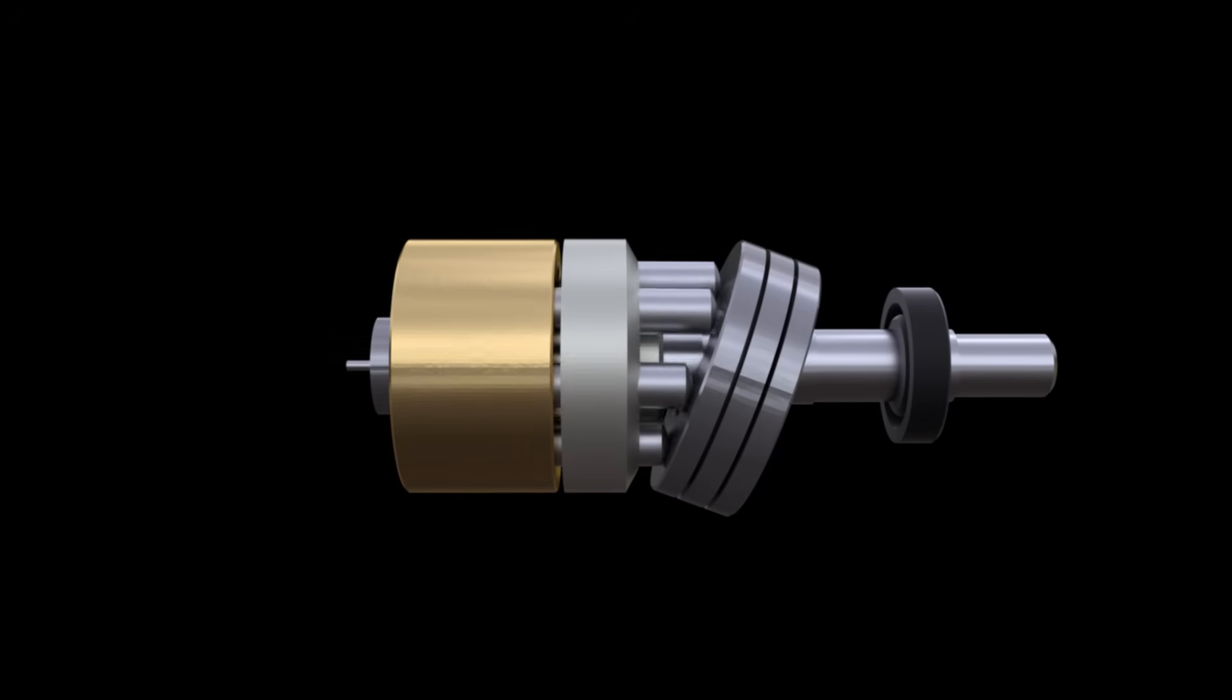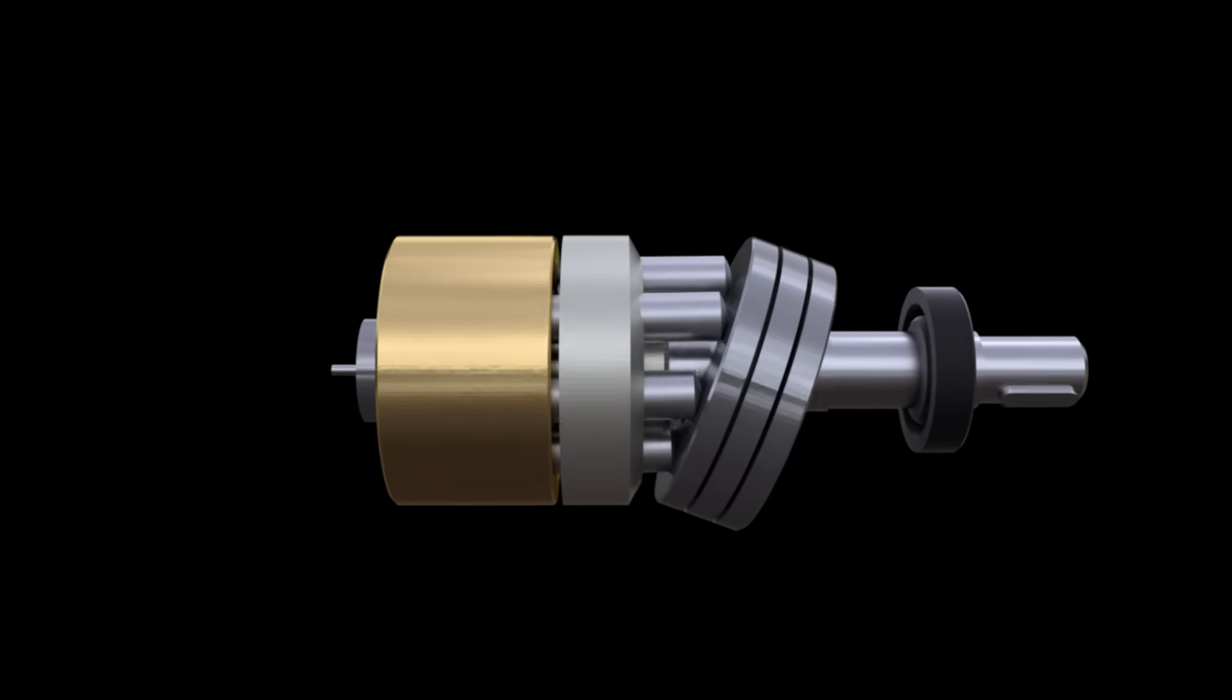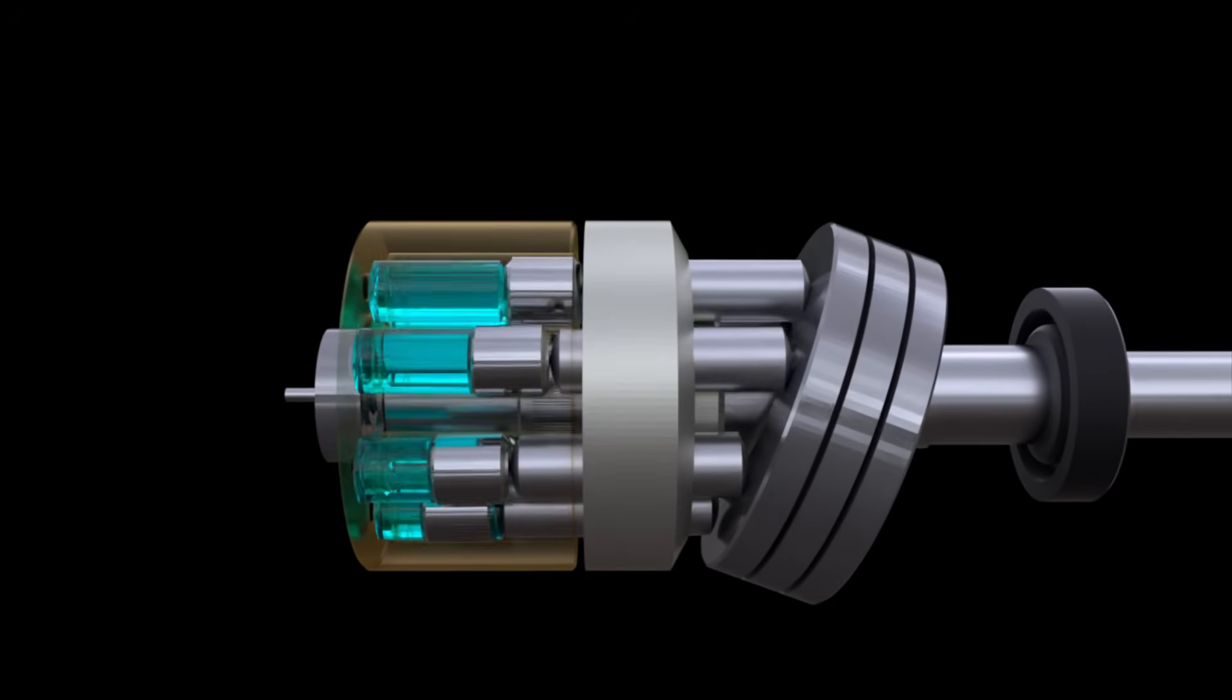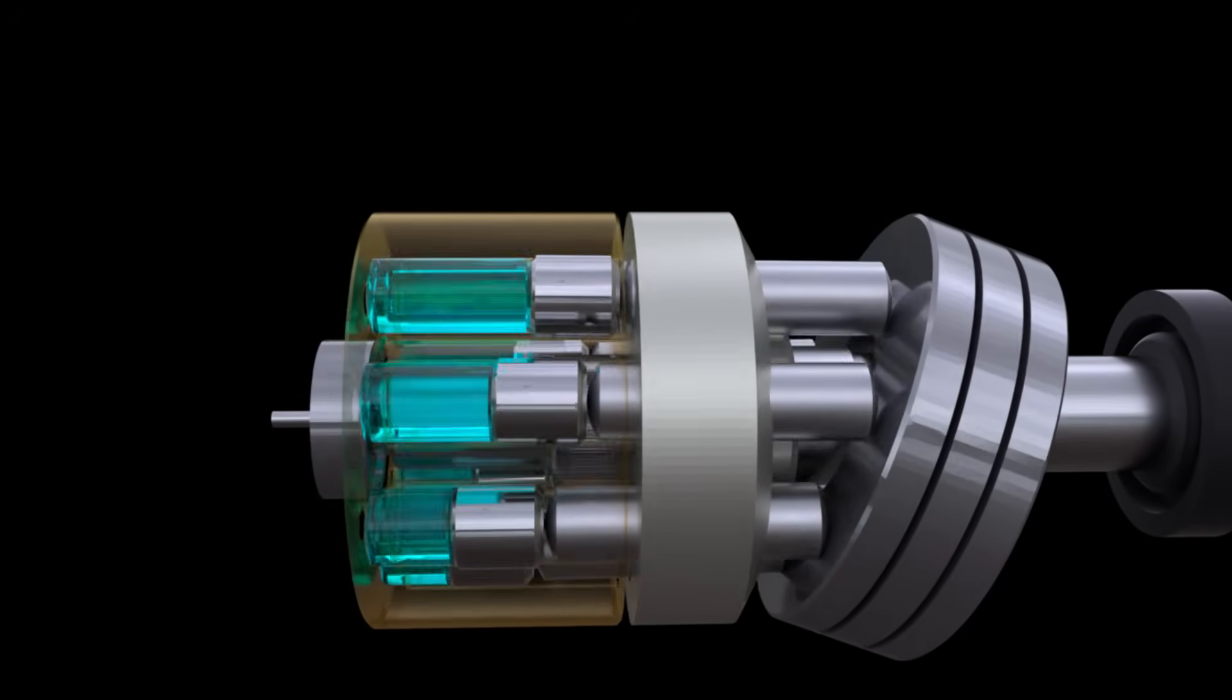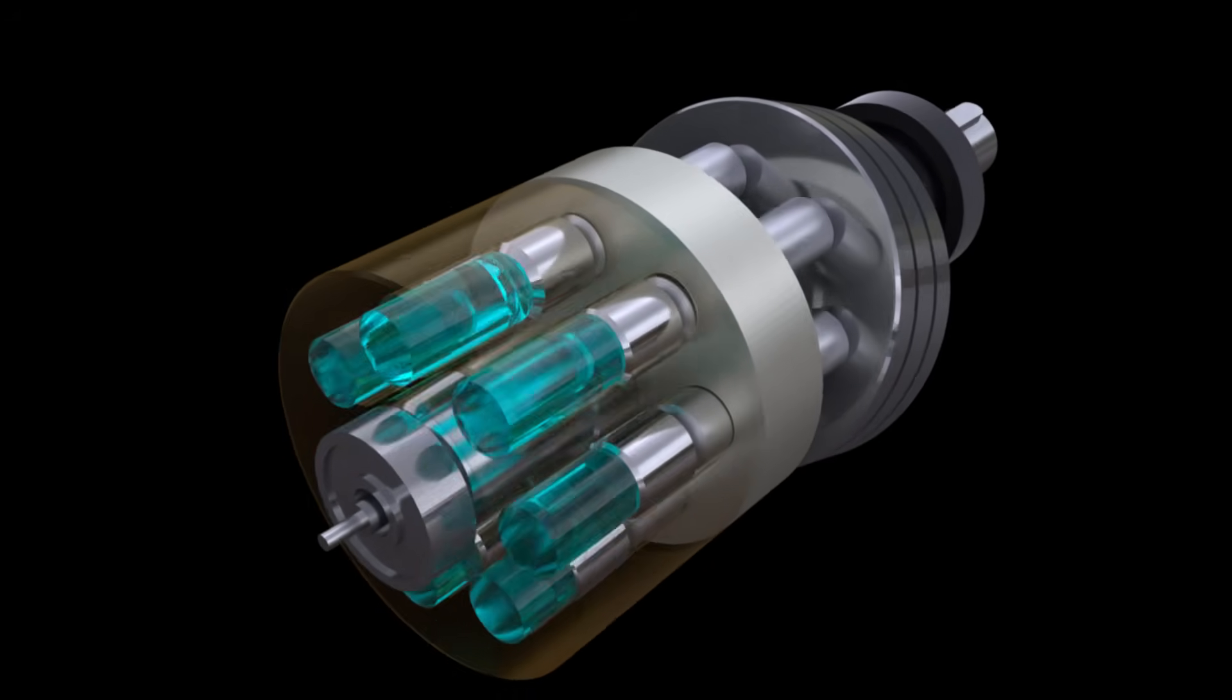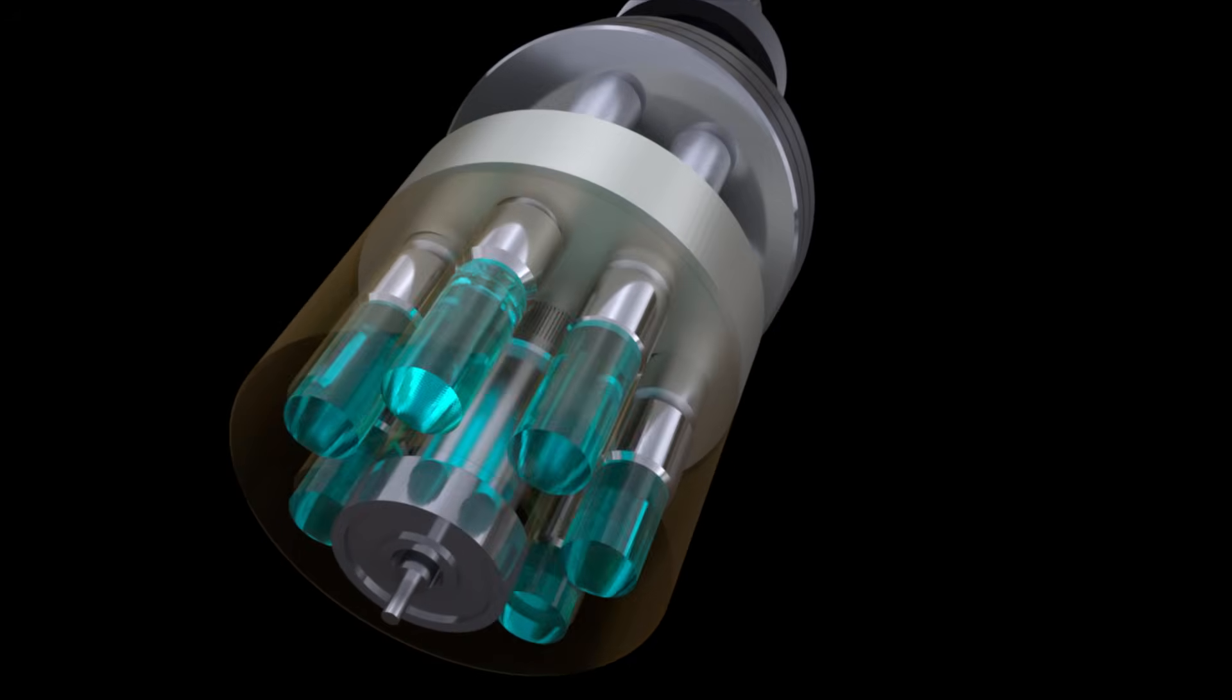When the block rotates, the pistons reciprocate. At the moment when the pistons move increasing the volume of the chamber, they are connected to the suction line, and when the pistons move in the opposite direction, thus reducing the volume of the working chamber, they are connected to the discharge channel.